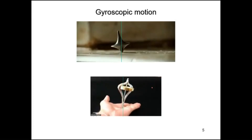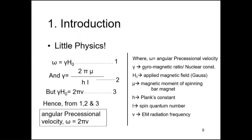Because there is precessional motion, circular motion is involved, so we have to deal with some physics. Don't worry — terms like omega, H0, and gamma you are familiar with. The motion appears to be circular and angular, so omega is equal to gamma times H0.